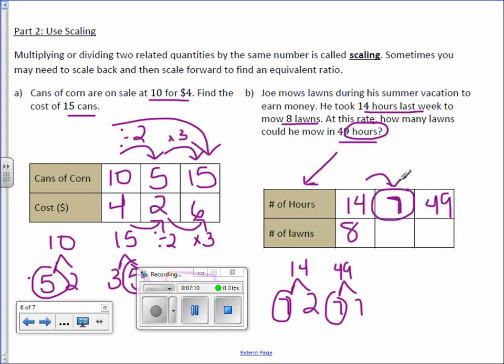To get from 14 to 7, we divided by 2. So do the same underneath. 8 divided by 2 is 4. Then up top, to get from 7 to 49, we multiply by 7. So again, do the same underneath. 4 times 7 is 28. So how many lawns could he mow in 49 hours? 28 lawns.